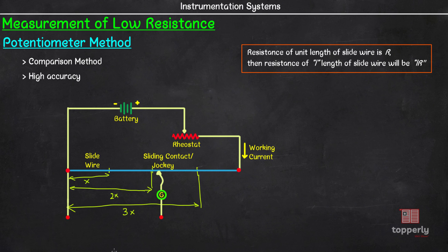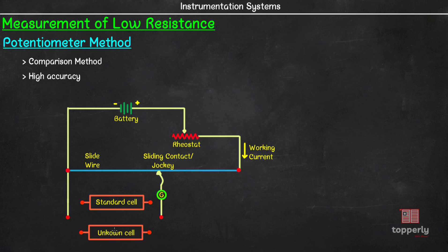Let's see the working of a potentiometer. We will explain it using two cells: a standard cell whose potential is known, and an unknown cell whose potential is to be measured. First, we connect the standard cell between the two contacts and slide the jockey over the slidewire until the galvanometer shows zero deflection. Let's say the galvanometer showed null deflection at this point, and we name this point as C.